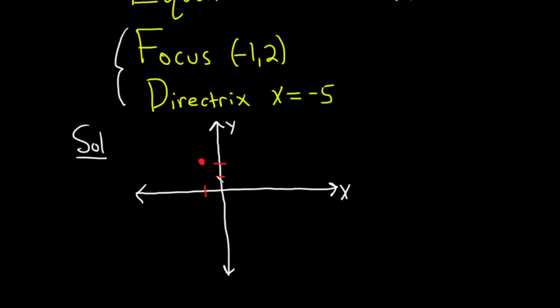And the directrix is x equals negative 5. That's a vertical line. So this will be the directrix and this is the focus.